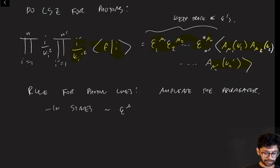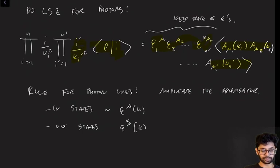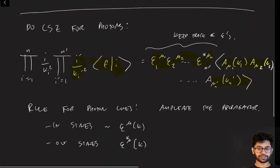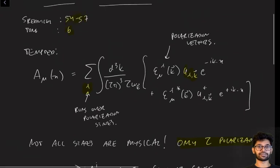In particular, in-states come with a factor of epsilon_μ, and out-states come with the conjugate factor epsilon_μ*, where these polarization vectors both depend on the momentum. And this was very heuristic; I've only just given you a brief sketch of what's happening, but again I refer you to these references if you want to learn more about how the canonical structure of this works.